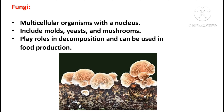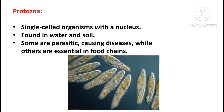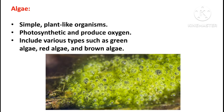Fungi are multi-cellular organisms with a nucleus, and include molds, yeast, and mushrooms. They play roles in decomposition and can be used in food production. Protozoa are single-celled organisms with a nucleus, found in water and soil. Some are parasitic and cause diseases, while others are essential in food chains. Algae are simple plant-like organisms that are photosynthetic and produce oxygen, and include types such as green algae, red algae, and brown algae.